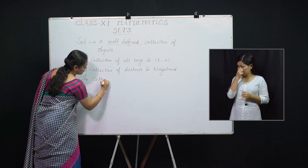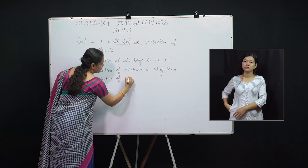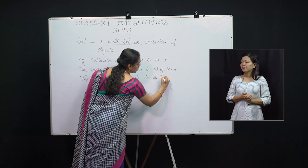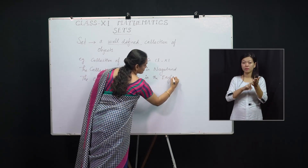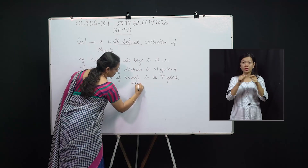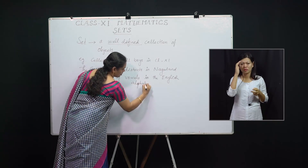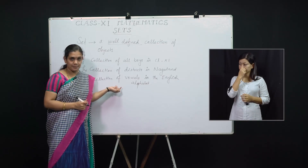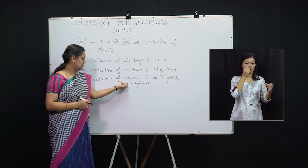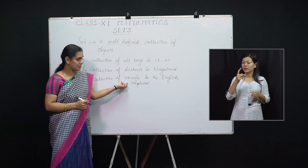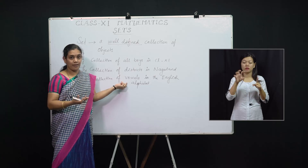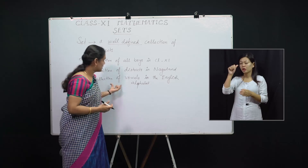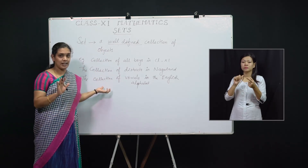The collection of vowels in the English alphabet gives us a unique answer. If I ask for the vowels in the English alphabet — whether to Indians, Japanese, Americans or Africans — they will all give you the unique answer. If we get a unique answer, then it is a set. If not, it is just a collection, not a set.